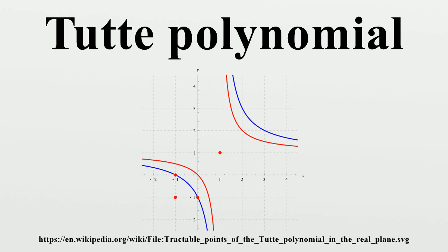The Whitney rank generating function is defined accordingly; the two functions are equivalent under a simple change of variables. Tutte's dichromatic polynomial is the result of another simple transformation. Tutte's original definition is equivalent but less easily stated.